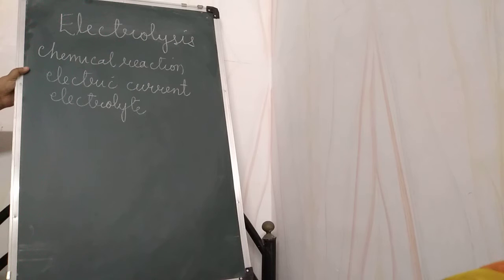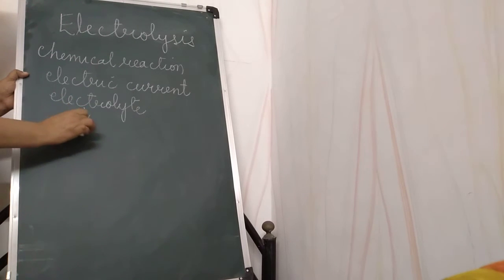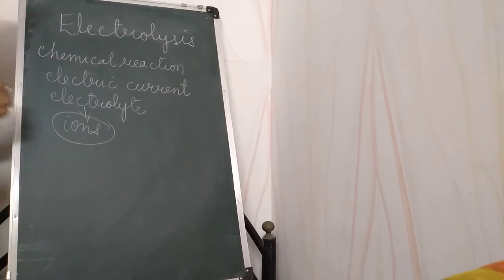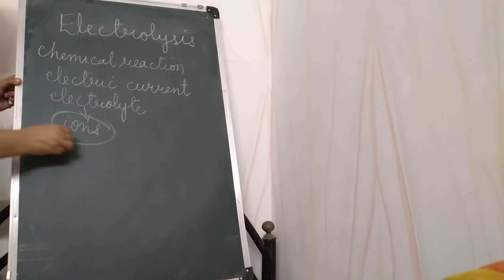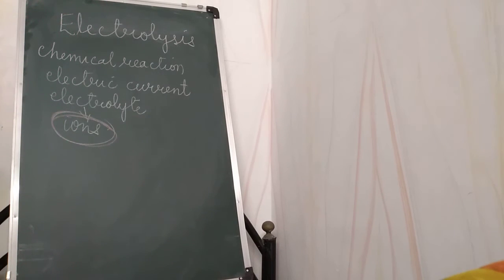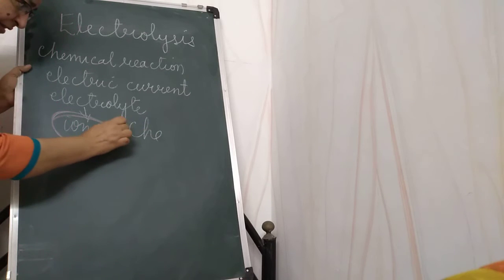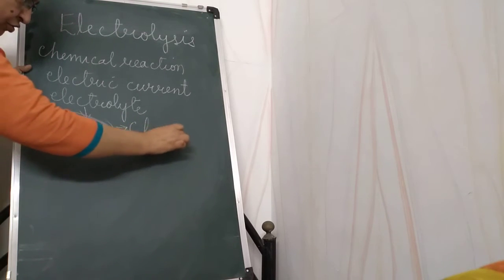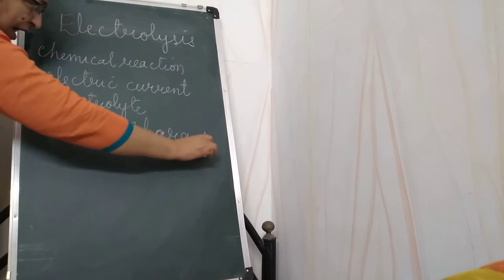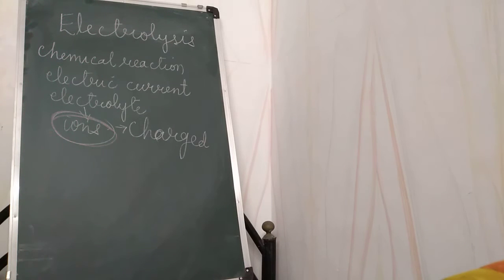Now, you know that the electrolyte contains ions. What does this electrolyte contain? It contains ions. Ions are the charged particles.